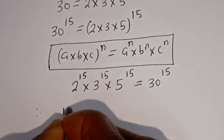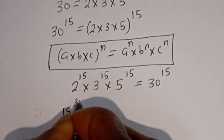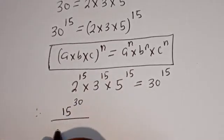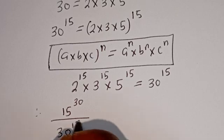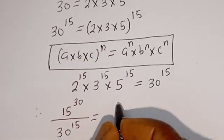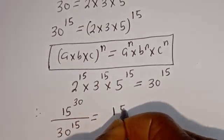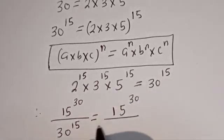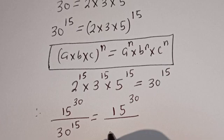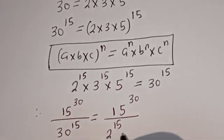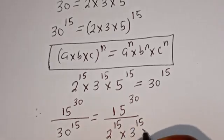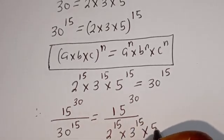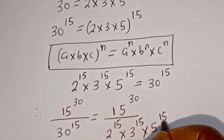Therefore, 15^30 divided by 30^15 is equal to 15^30 divided by (2^15 multiplied by 3^15 multiplied by 5^15).